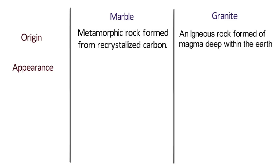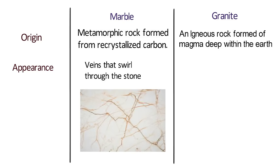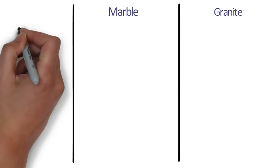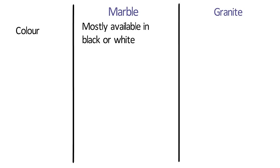Marble has veins that swirl through the stone, whereas granite has a more flake-like granular appearance. In terms of color, marble is mostly available in black or white, whereas granite can be sourced in a variety of different colors.